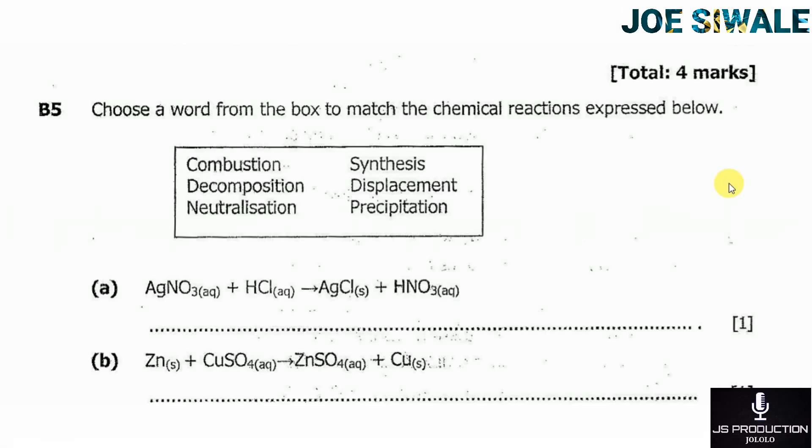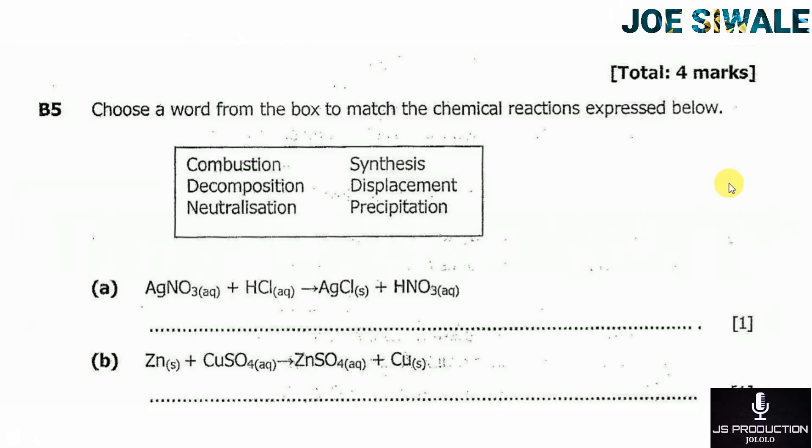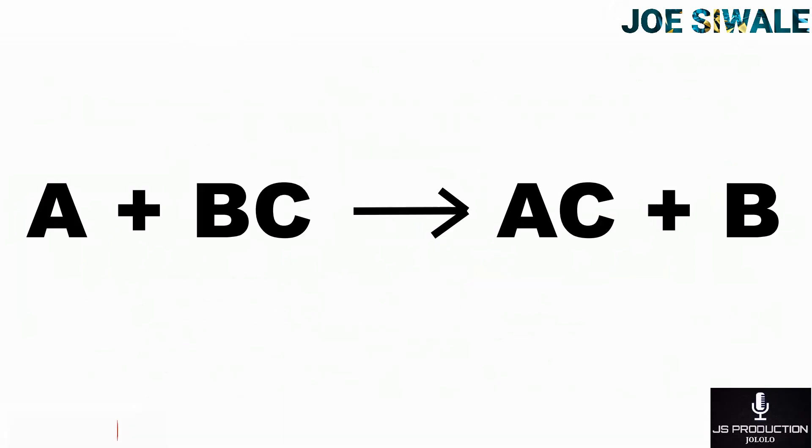Then what is displacement? Displacement is a reaction in which a more reactive metal displaces a less reactive metal from its compound. For example, if you have metal A plus compound BC, and if metal A is more reactive than element B, this will produce compound AC plus metal B.